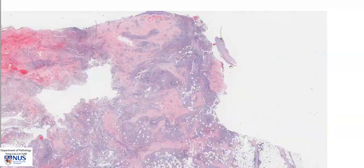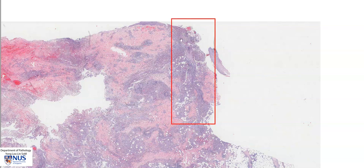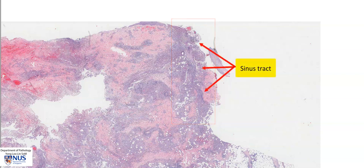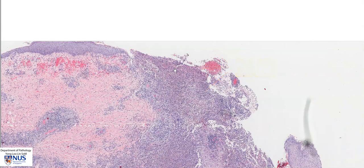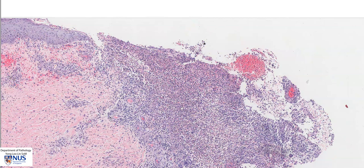Here, towards the right edge of this specimen, we can see that there is almost a vague vertical tract, and this vertical tract is composed of acute suppurative inflammation. This is a sinus tract where the acute suppurative inflammation opens back up into the skin surface, so this would appear clinically as a sinus tract that is discharging purulent material.